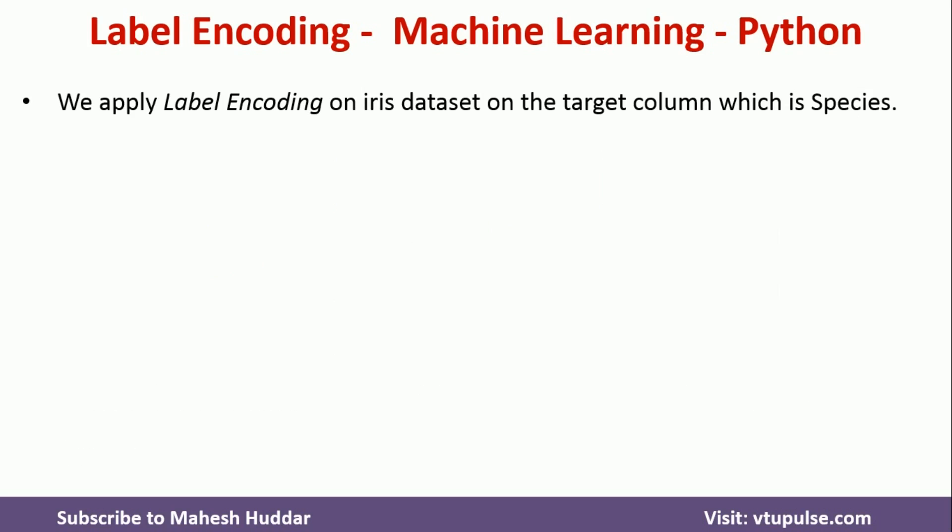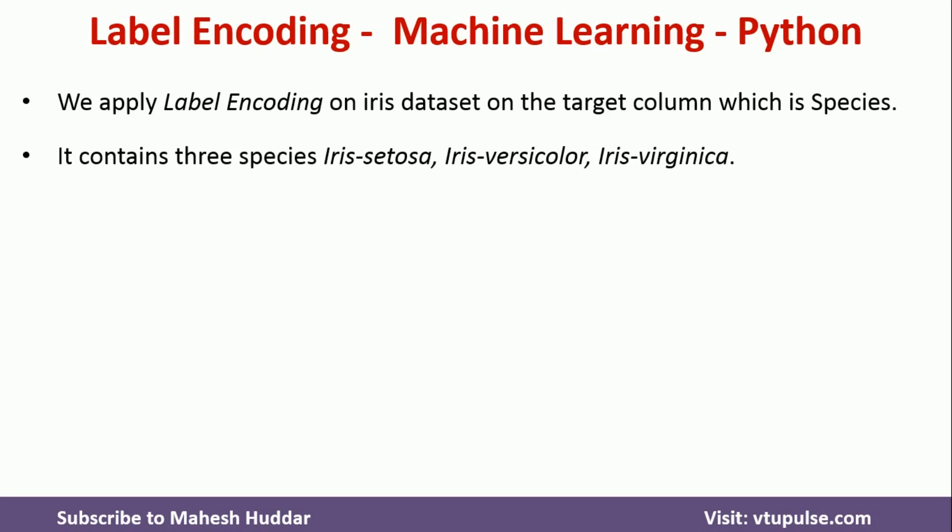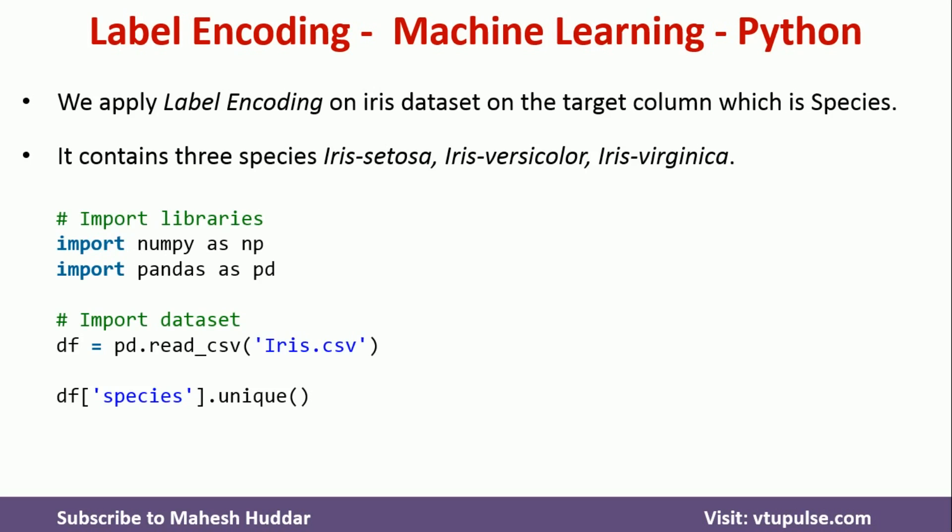Now we will see how to perform label encoding in Python using the sklearn library. I am going to use the iris dataset. There is a target column called species which has three possible values: iris setosa, iris versicolor, and iris virginica. First, we import two libraries — numpy and pandas — then read the dataset using pd.read_csv('iris.csv').